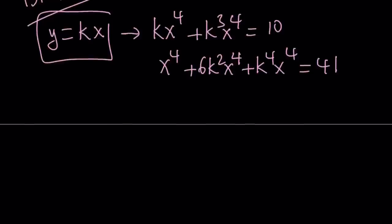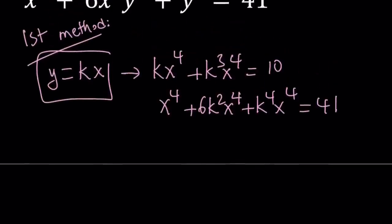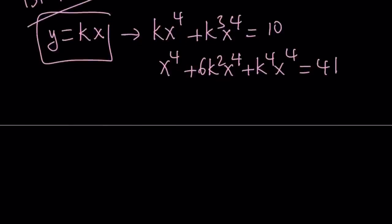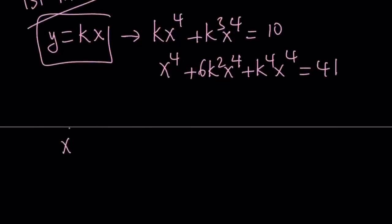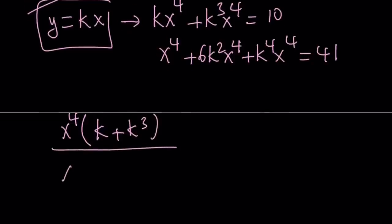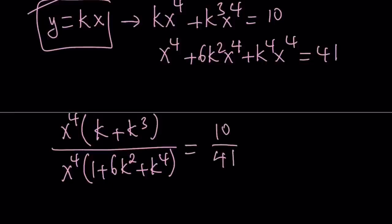So the only thing that I did was replace y with kx and do it in both equations. Now let's factor out x⁴. From the first one, we get k + k³. Then I'm going to divide it by the second equation. x⁴ can be taken out again: 1 + 6k² + k⁴. Since I'm dividing both equations side by side, I get 10/41.